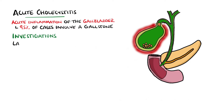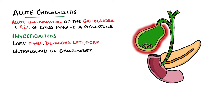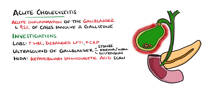Lab tests would likely show leukocytosis as well as raised liver enzymes. Raised bilirubin should raise suspicion of a stone in the common bile duct. Ultrasound is the imaging modality of choice, looking for stones, edema, thickening of the wall, and gallbladder distension. A hepatobiliary iminodiacetic acid or HIDA scan uses radiotracers to evaluate gallbladder function and potential cystic duct obstruction. Treatment is ideally a laparoscopic cholecystectomy.